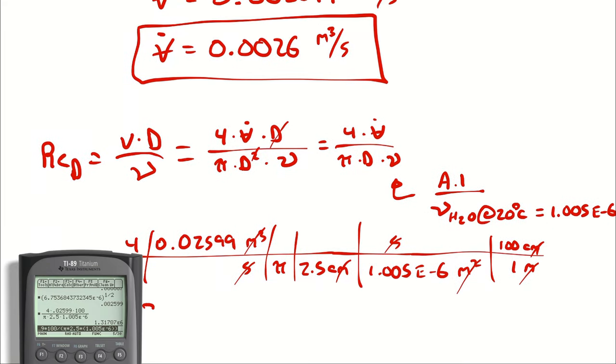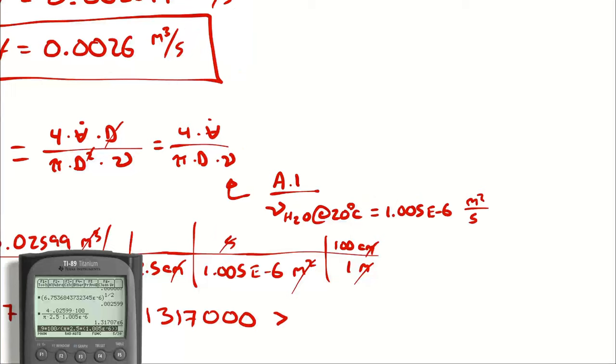Which is going to be about 1,317,000, which is greater than 2,300. Therefore, my turbulent assumption was accurate.